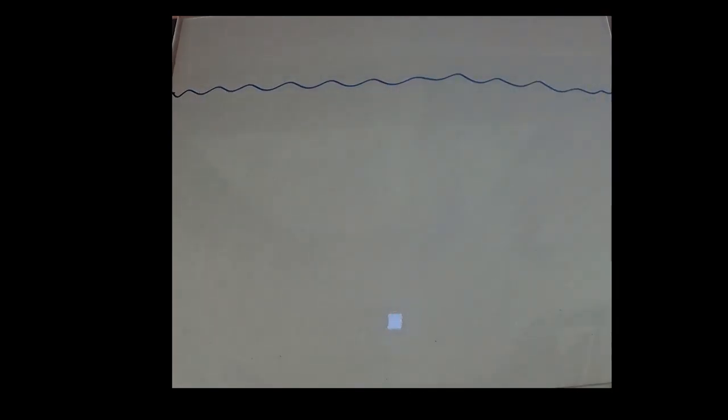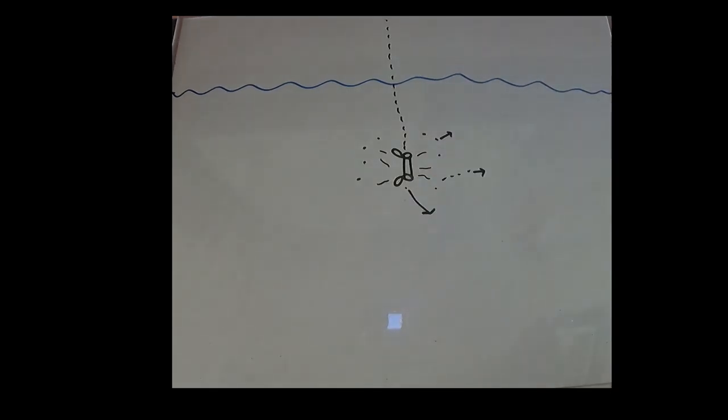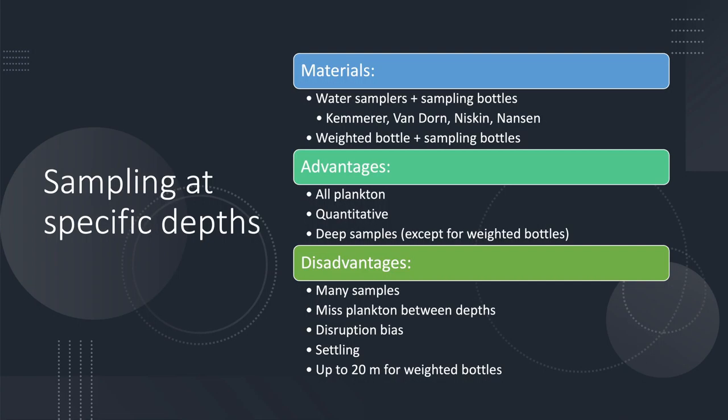While lowering the devices, it is advantageous to disrupt the water as little as possible, because some plankton may move away from the area and bias the results. Furthermore, it is once again important to concentrate or settle the plankton so that they can be more easily counted.